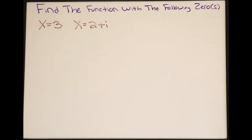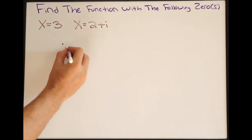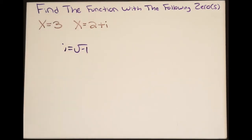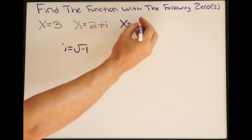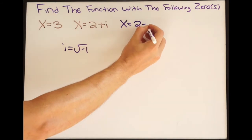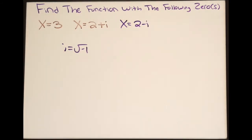i is the square root of negative 1, so we know that if it's positive i, it also has to be negative i, because the square root is plus or minus. So not only do we have the complex zero 2 plus i, we also have the complex zero 2 minus i.